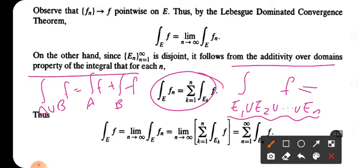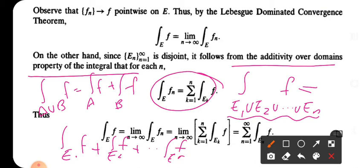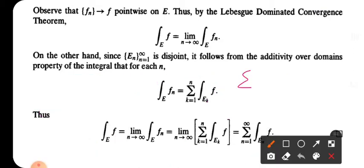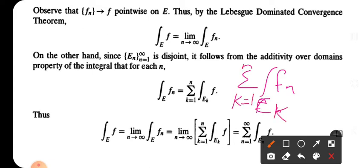So this equals the integral of F over E_1, plus the integral of F over E_2, and so on — that is, sigma from k equal to 1 to n of the integral of F over E_k.